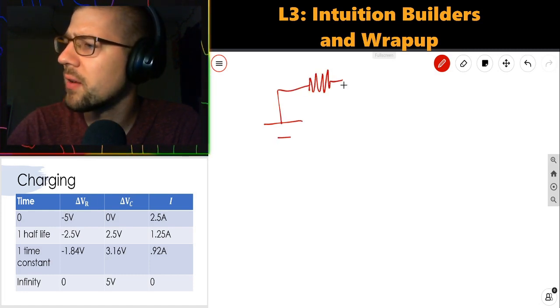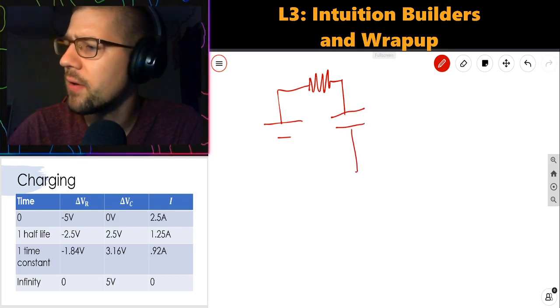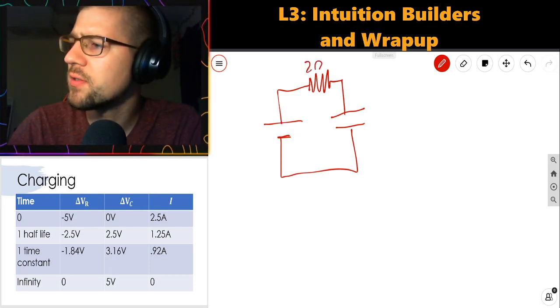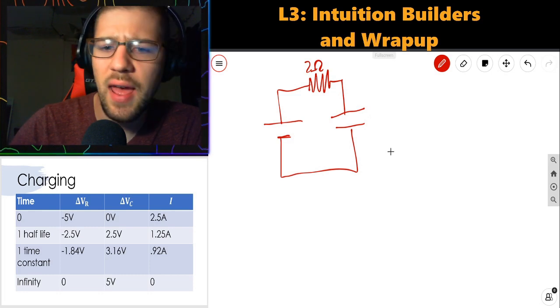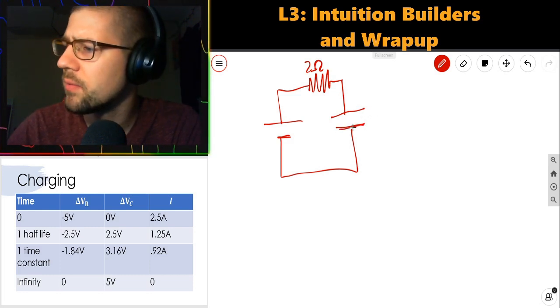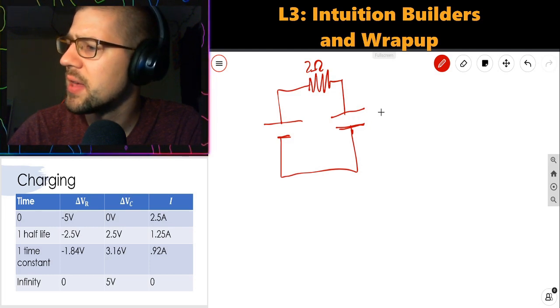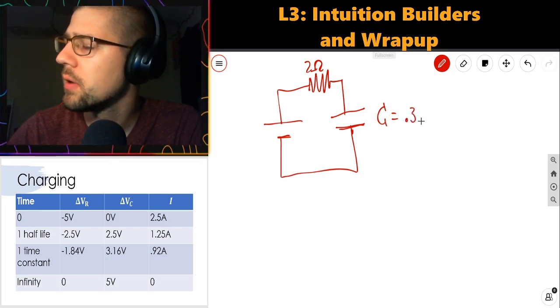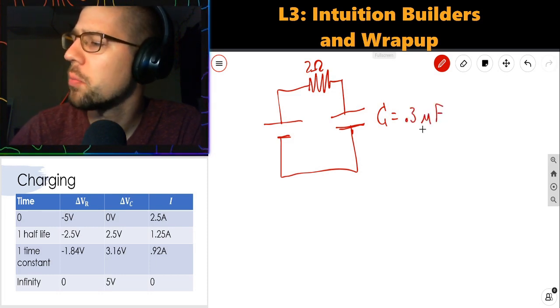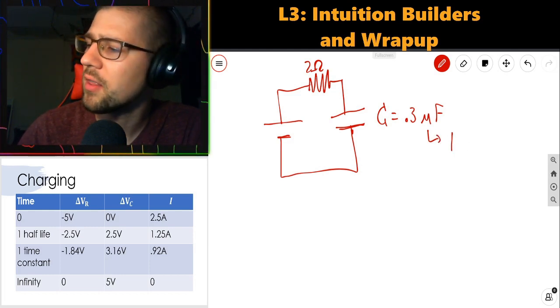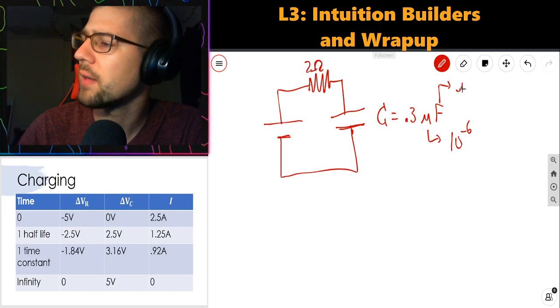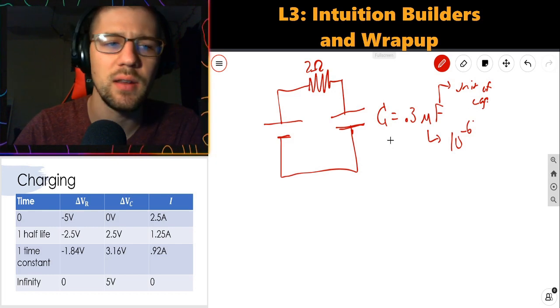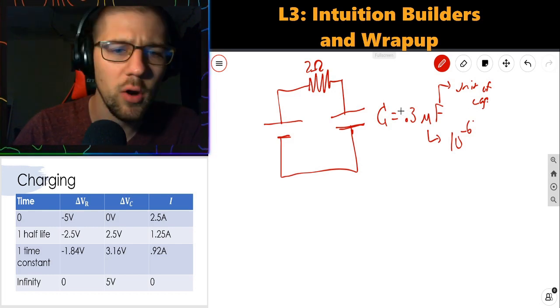Let's slap some numbers on things to make it a little more concrete. So I have a resistor that is a 2 ohm resistor, and the capacitance of this capacitor here is C equals 0.3 microfarads. Micro means 10 to the minus 6. Farad is just the unit of capacitance.